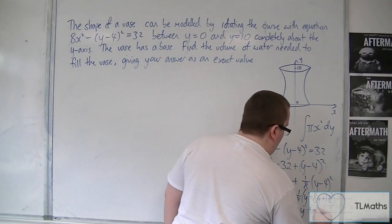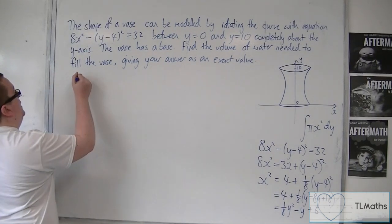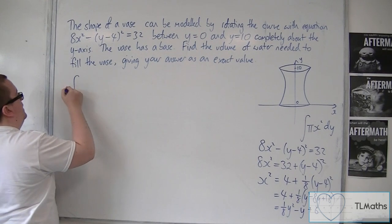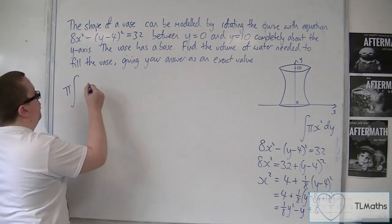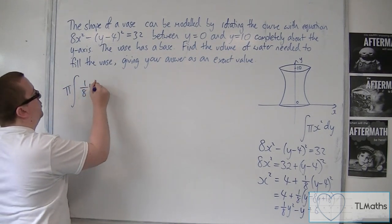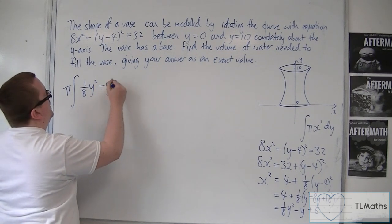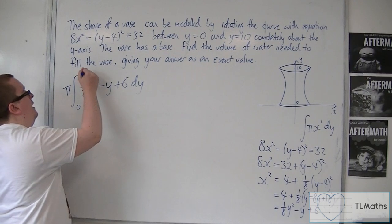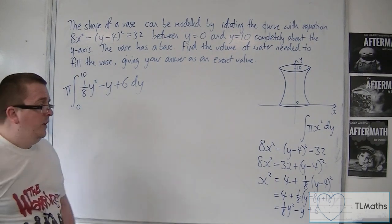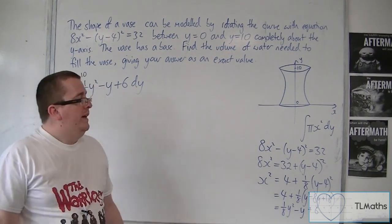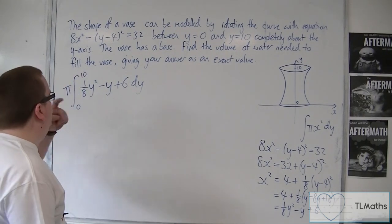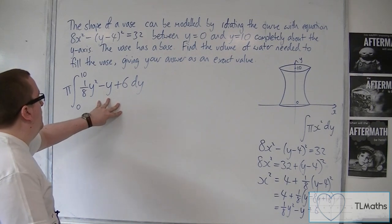Add the 4 is 6. So we have the integral of π, let's put that π on the outside of the integral, of (⅛y² - y + 6) dy, integrated between 0 and 10. So the hardest bit of this problem is really just making sure you can rearrange it to get x² equals. The integration from here on is very straightforward.